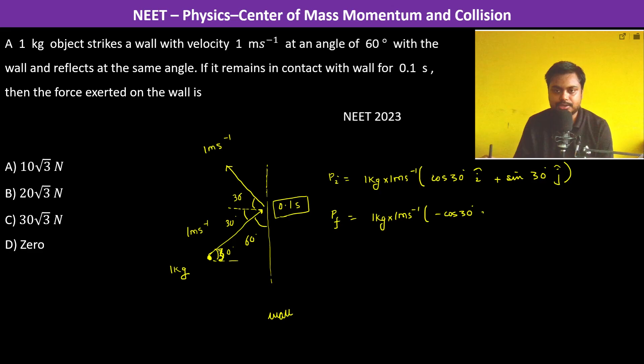Minus cos 30° i cap plus sin 30° j cap. So therefore, p_f minus p_initial, which is the change in momentum, is going to be minus 2 cos 30° i cap into 1 kg into 1 meter per second.